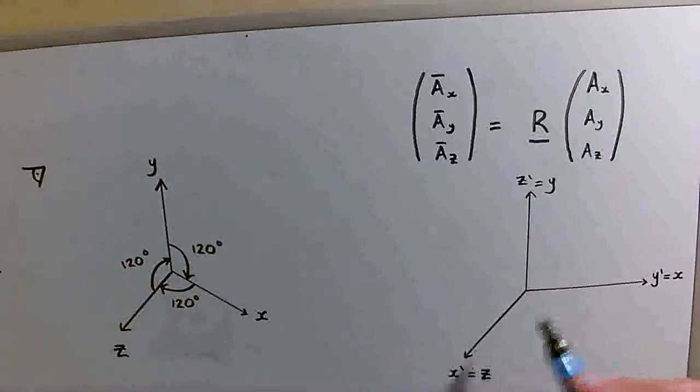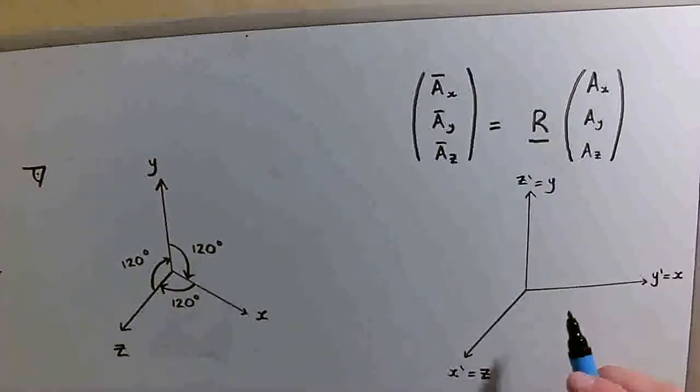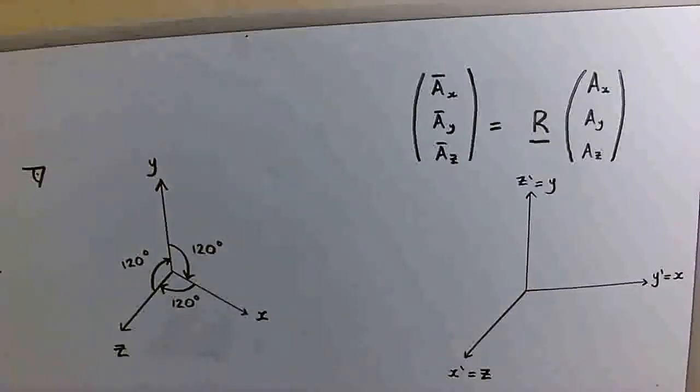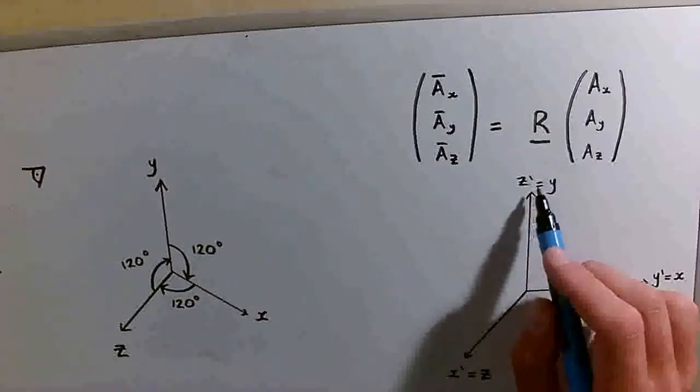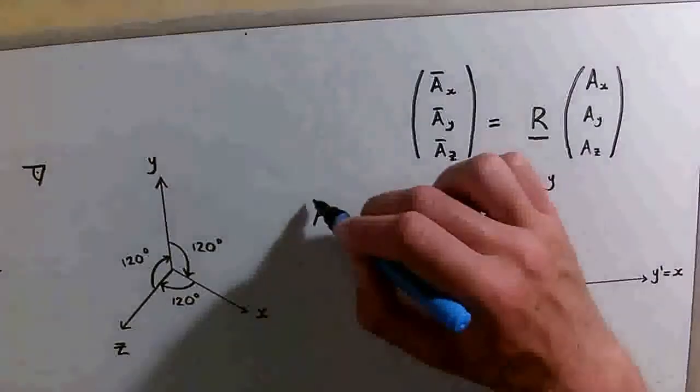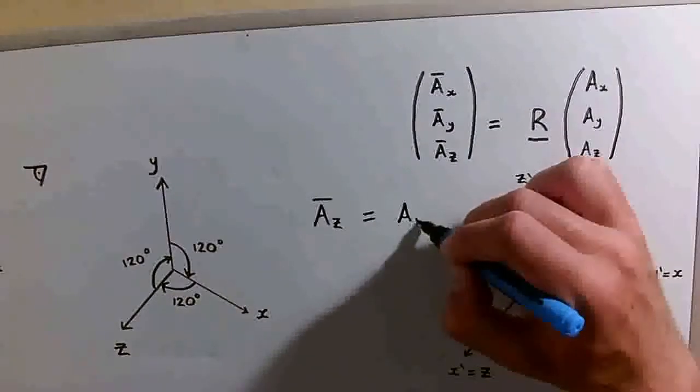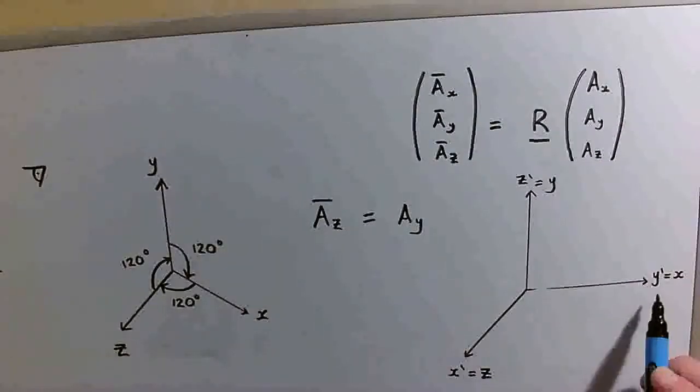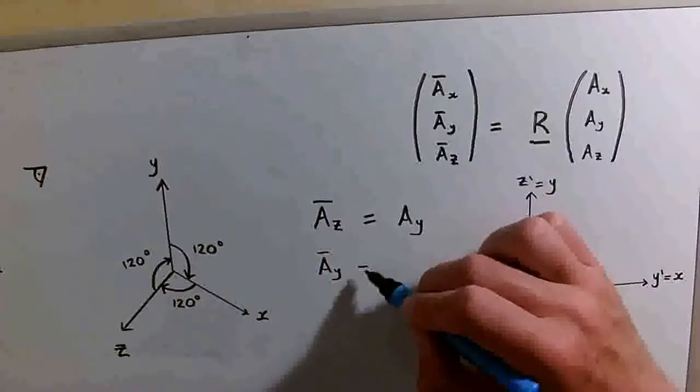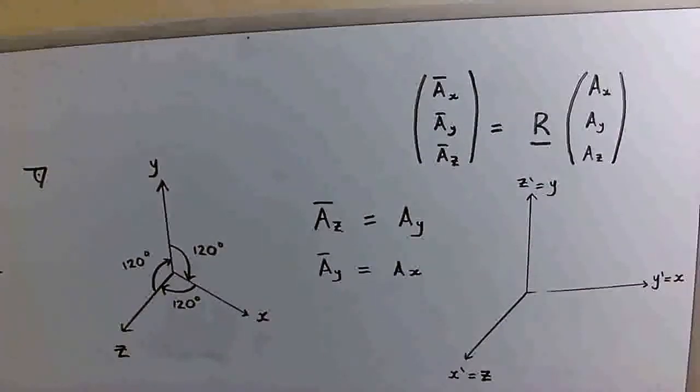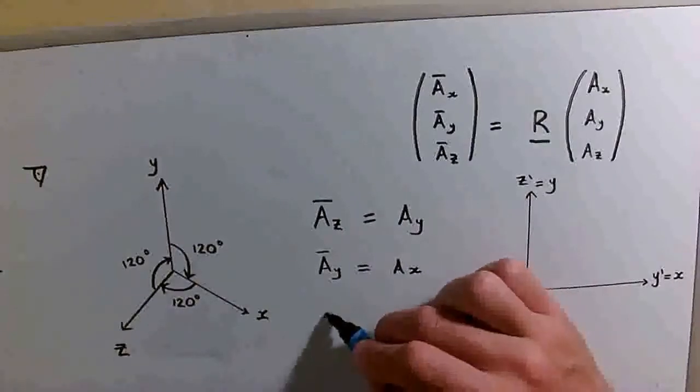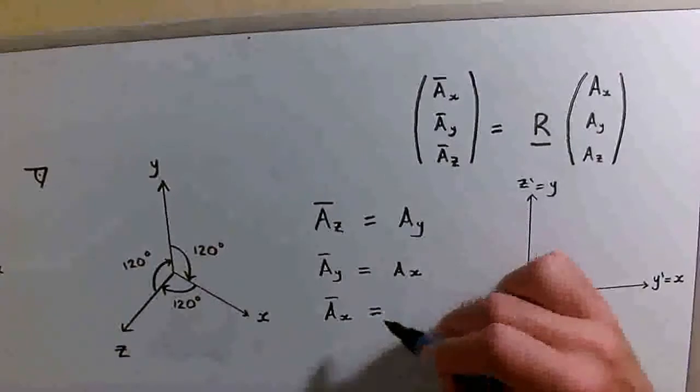Using the picture we've got here of this coordinate axis, we can start to write down some relationships between this set of coordinates and this set of coordinates. For example, the modified z coordinate is just equal to the original y coordinate, so we have A_z bar is simply equal to A_y. The modified y coordinate is equal to the original x coordinate, so we have A_y bar is equal to A_x. Finally, the modified x coordinate is equal to the original z coordinate, so we have A_x bar is equal to A_z.